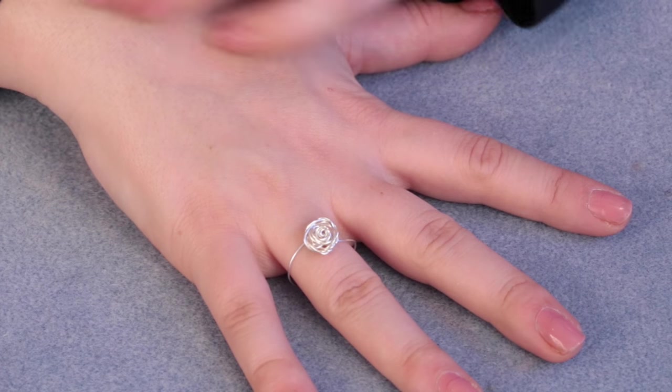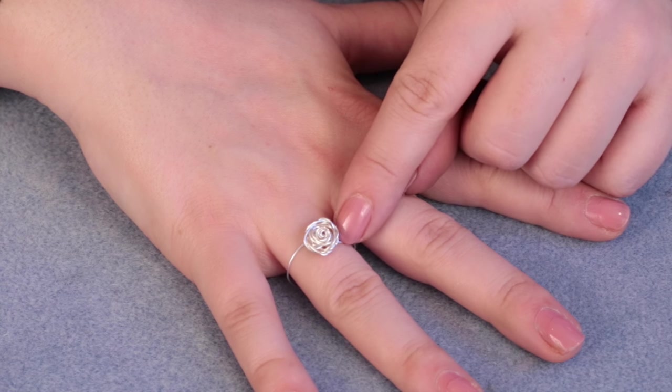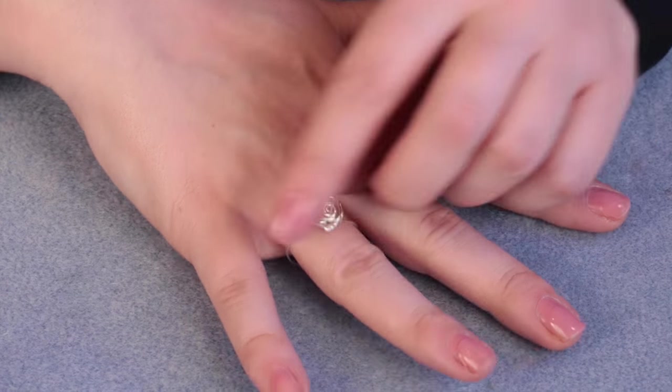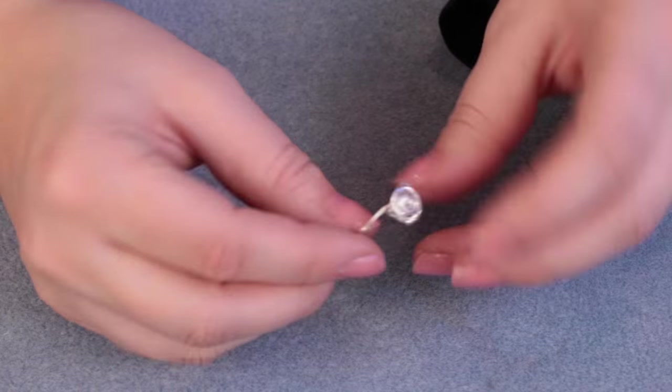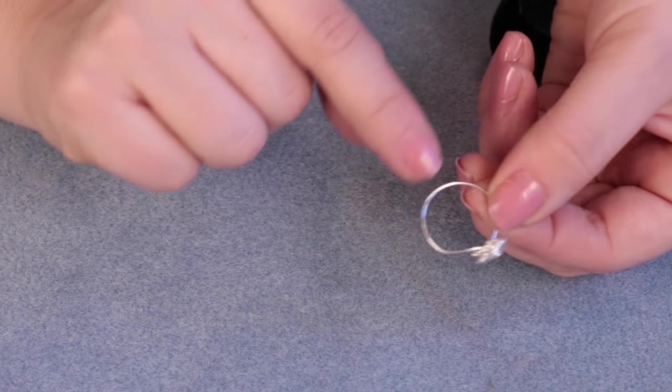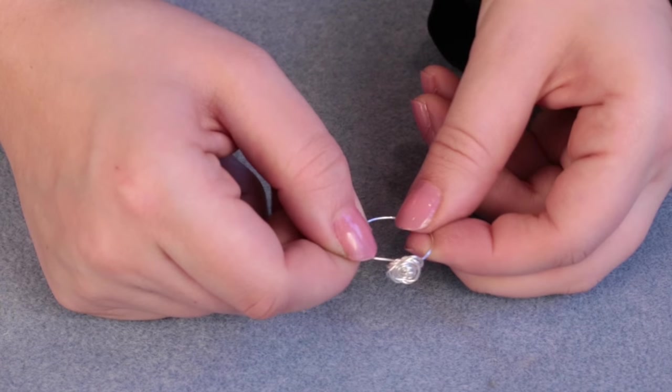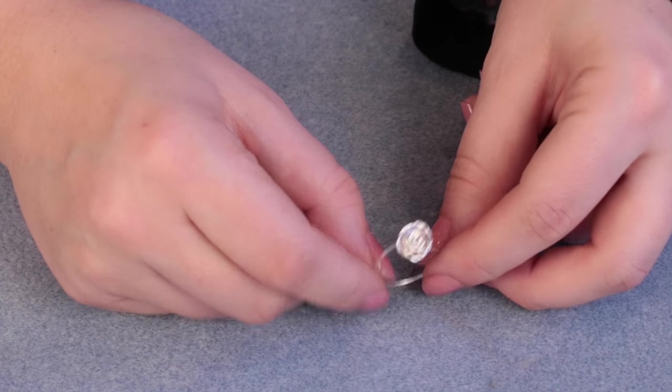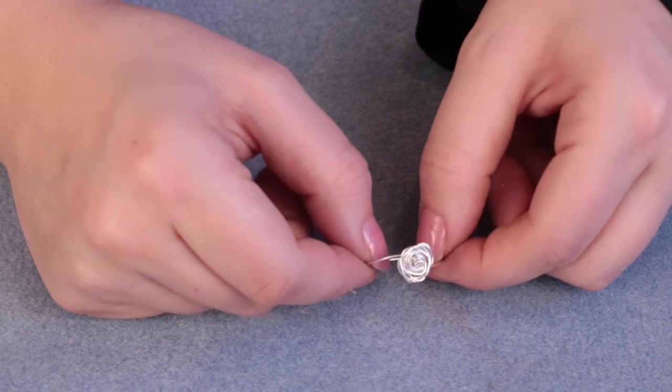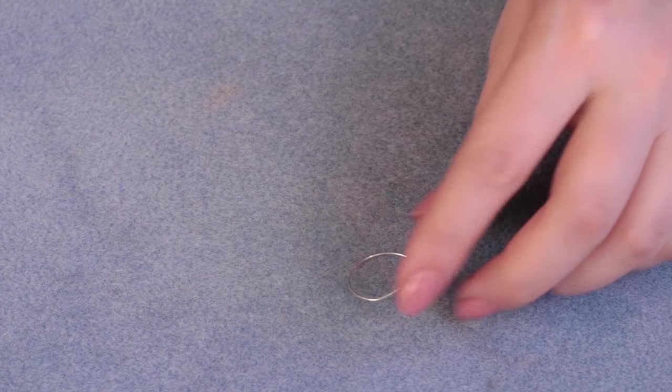What you could do to make it more robust is take another long length of wire and just wrap it around the base - start at one side and go all the way around. That will just make it a little more robust. But using this ring shape, we are going to make a stud, so I'll show you how to do that. It's very simple.